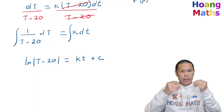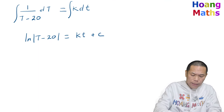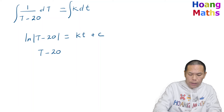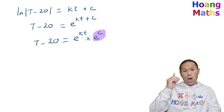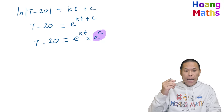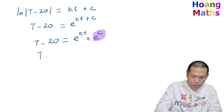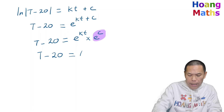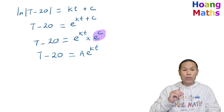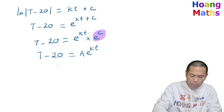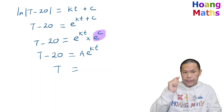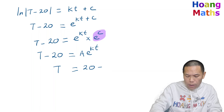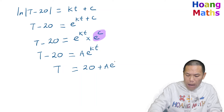Now we solve for capital T. We exponentiate both sides: T minus 20 equals e to the power of (kt plus c). Since e to the power of c is a constant, let's call it 'a'. So T minus 20 equals a·e^(kt), which means T equals 20 plus a·e^(kt).